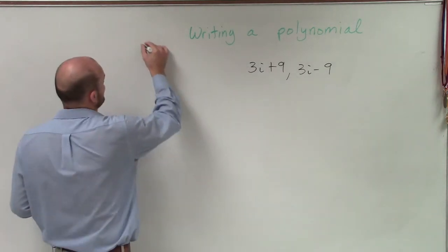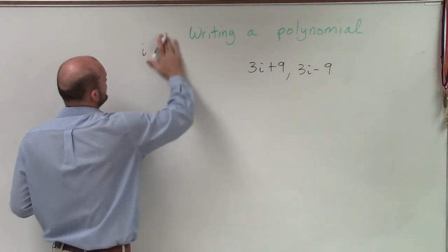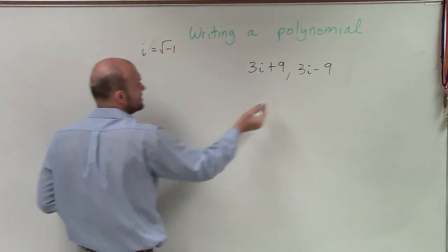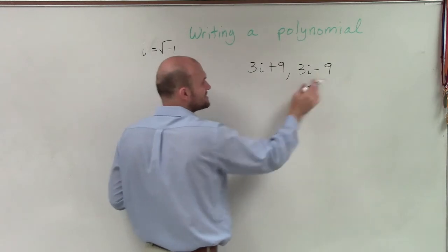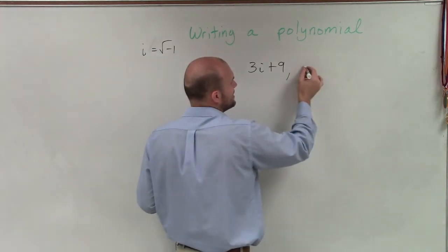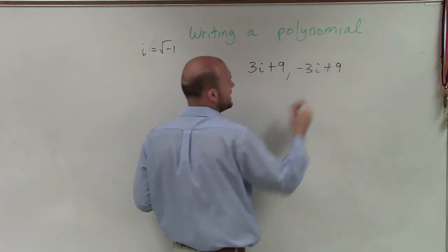we get i from i equals the square root of negative 1. So i is going to be your plus or minus. Right now, my i is still positive. So that's not going to be my conjugate. The conjugate of this is going to be a negative 3i plus 9.